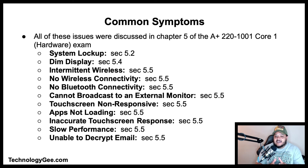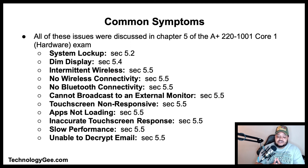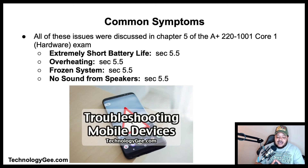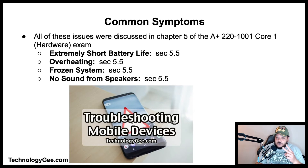The following mobile device issues have been discussed already in chapter five of the A+ 220-1001 Core 1 or the hardware examination. If you're watching this video, go look in my playlist for the 220-1001 playlist — look for videos 5.2, 5.4, and 5.5. They discuss everything from system lockups to no Bluetooth connectivity, slow performance, extremely short battery life, and overheating frozen systems. Look for the video with that thumbnail and all your questions shall be answered.